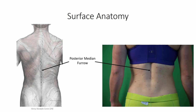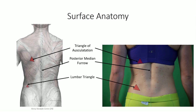A portion of the lateral border of trapezius contributes to the so-called triangle of oscillation, along with the medial border of the scapula and the superior border of latissimus dorsi. This defines a thin region of the thoracic wall with minimal muscle overlap, which is ideal for stethoscope placement for characterization of breath sounds. Another triangle, known as the lumbar triangle, is formed by the lateral border of latissimus dorsi, the superior border of the iliac crest, and the border of the external oblique. This is an infrequent site of herniation.